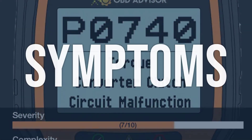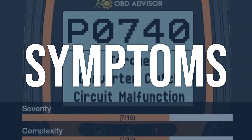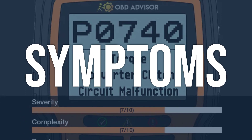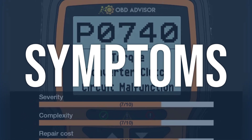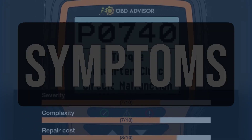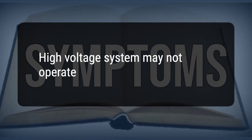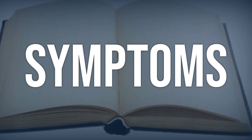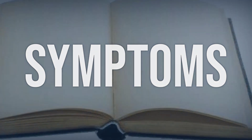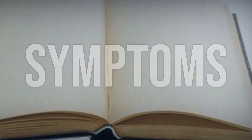When you encounter this OBD error, the vehicle typically exhibits the following symptoms: the high-voltage system may not operate. Now we talk about possible causes, and how to diagnose and fix.